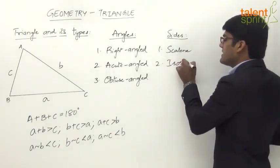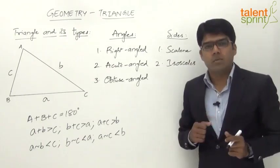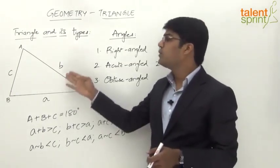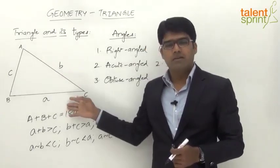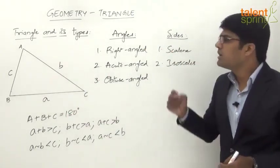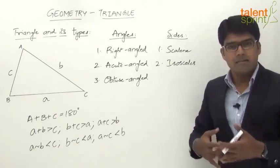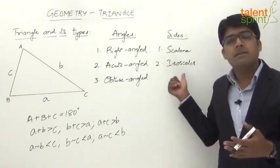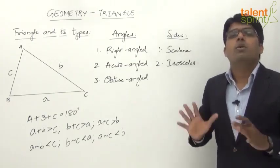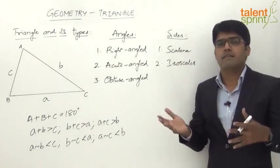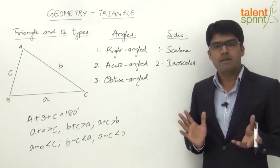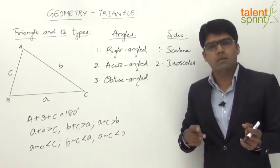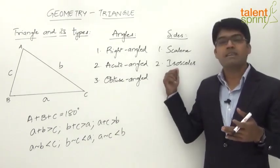The second type is an isosceles triangle, where any two sides are equal — for example, a equals b, or b equals c, or c equals a. When two sides are equal, the opposite angles will also be equal. In a scalene triangle, all three sides are different, so all three angles are also different. If two angles were equal, it would mean two opposite sides are equal, making it an isosceles triangle instead.